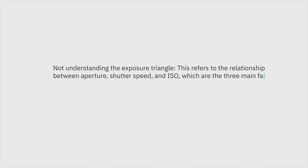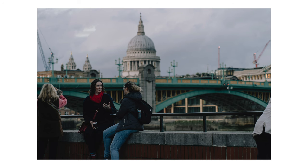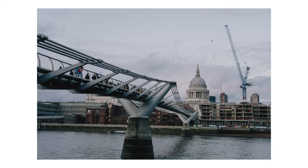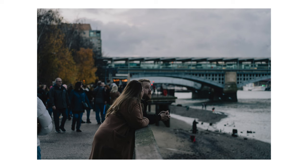The AI said: mistake number one — not understanding the exposure triangle. This refers to the relationship between aperture, shutter speed, and ISO, which are the three main factors that determine the exposure of a photograph. Understanding how these three factors interact can help you take better exposed photos. This is number one for a reason — it is a cornerstone of photography. You need to make sure your photograph is exposed correctly.